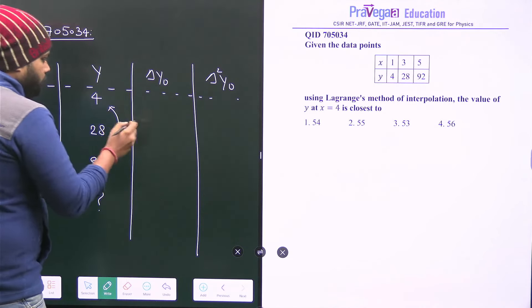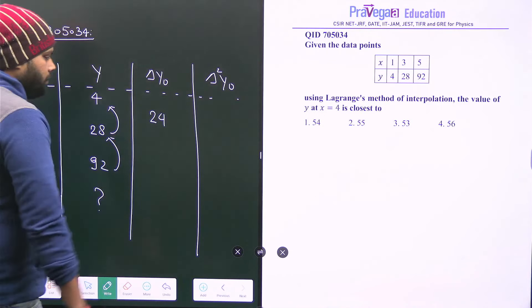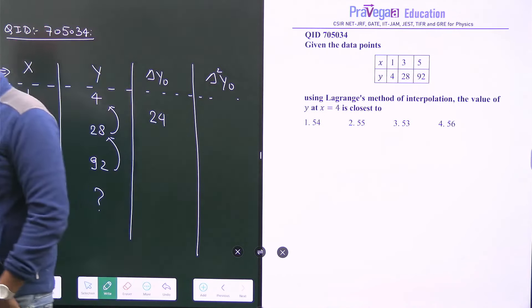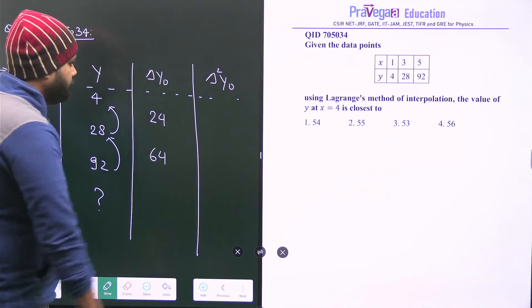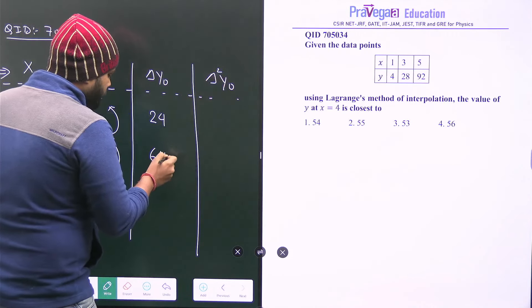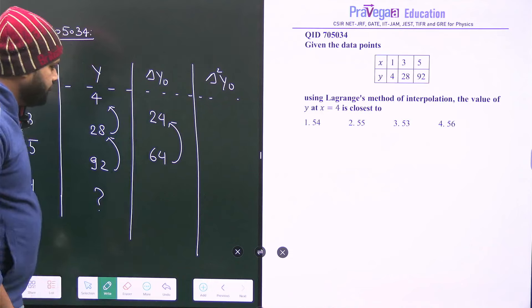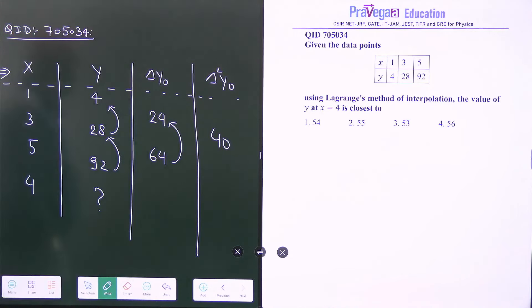So it will be 28 minus 4, that is 24, and 92 minus 28, that is 64. So this value will be 64. And how you will find delta square, delta square y0, just minus 24 from 64, so you will get 40. Alright.